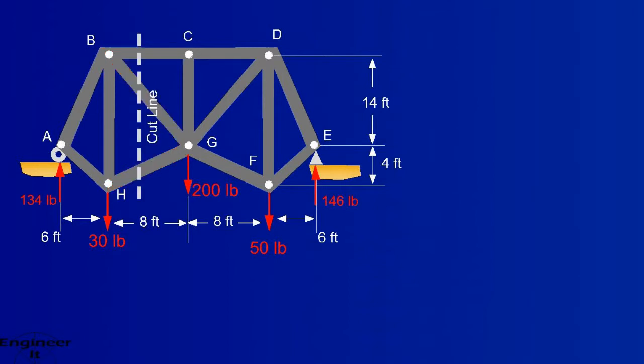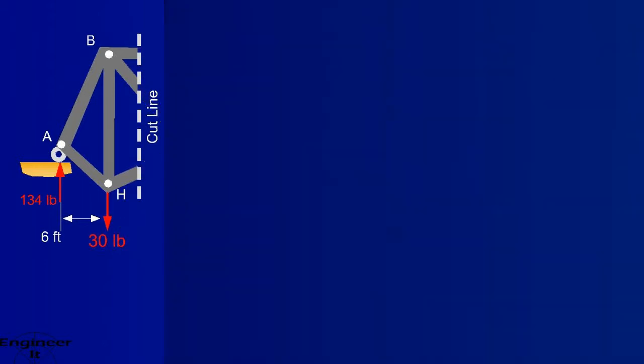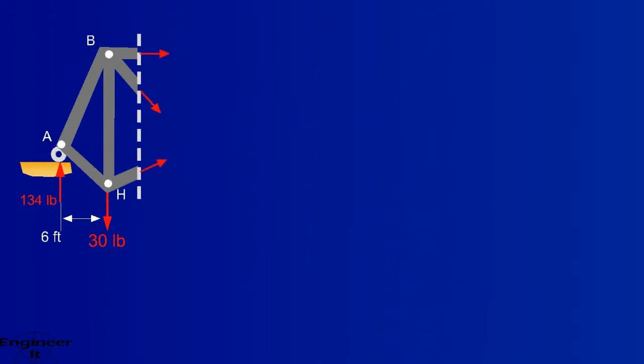After making the cut, deciding which side of the truss to drop off is the next step. It's usually preferred to keep the side with less external forces. Next is replacing those cut members with external forces as well. These will represent the force in the member itself.